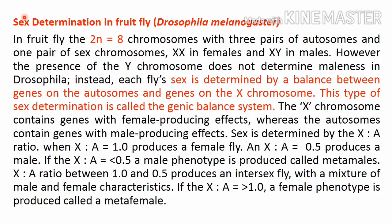A special case is sex determination in the fruit fly Drosophila melanogaster. The diploid number is 8, so the haploid number n equals 4. In this organism, the Y chromosome does not play any role in sex determination. Instead, it is the ratio of the X chromosome to the haploid set of autosomes that determines sex. In Drosophila, the sex chromosomes are XX in females and XY in males, just like humans.